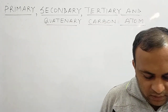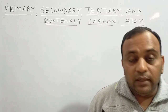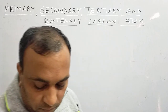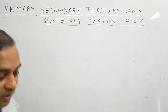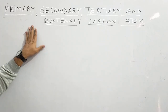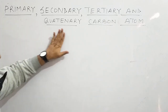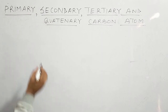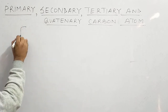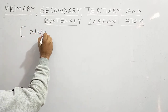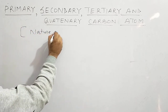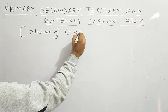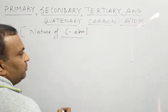Students, today we will study the topic of the nature of carbon atoms. Carbon atoms are of four types: primary, secondary, tertiary, and quaternary. This classification is also referred to as the nature of the carbon atom.